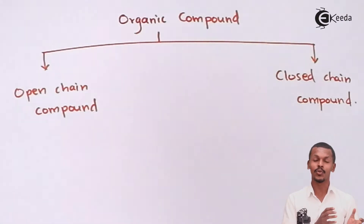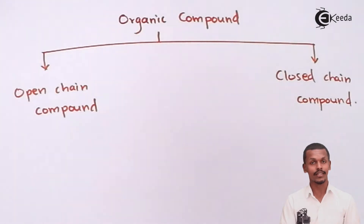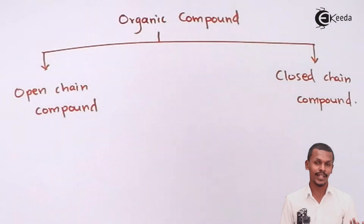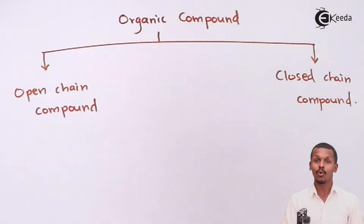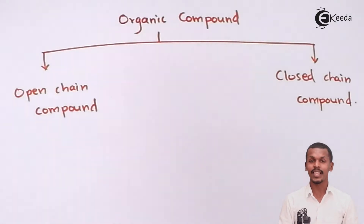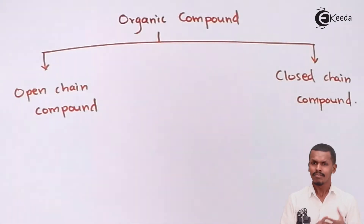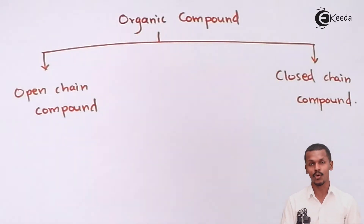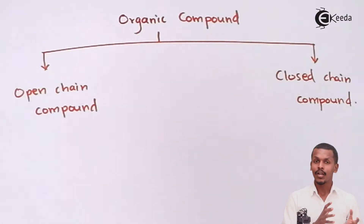Aliphatic organic compounds can also be called acyclic organic compounds, because all the carbon atoms are arranged in an acyclic or open chain — they are not forming a cycle. For the closed chain, carbon atoms are known as cyclic chain organic compounds. For example, butane and hexane are open chain organic compounds, while benzene is a closed chain or cyclic chain compound.